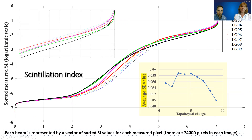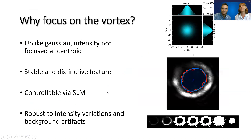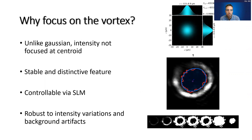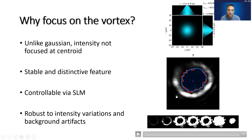Now I'd like to introduce Professor Esposito to continue with the analysis. The second part of our analysis focused on the vortex of these beams. For those familiar with beam wander work, traditionally — for example, in the case of a Gaussian beam — one might look at the centroid of the intensity and track how that moves around, and that probably makes a lot of sense for a Gaussian beam.